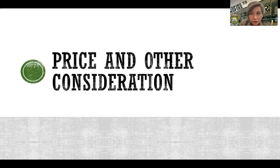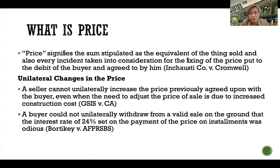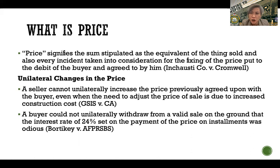We're already on Chapter 4, which is all about price and other consideration. What's the price? From the definition of the contract of sale, we understand it as the equivalent of the thing sold. But in the case of Inchowski Company versus Cromwell, the price is not just the equivalent of the thing being sold — it also includes every incident taken into consideration for the fixing of the price put to the debit of the buyer and agreed to by him.